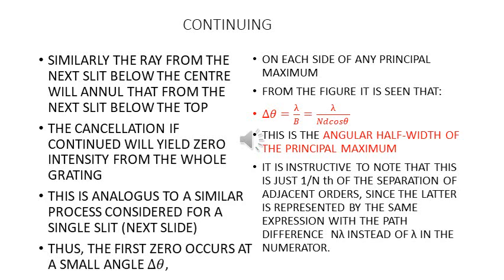Thus the first zero — the first minima — occurs at a very small angle Δθ on each side of any principal maximum. From the figure we can see that Δθ is given by λ/b, or this equals λ/(Nd·cosθ), where b = Nd·cosθ. The phase difference is λ/N. This is known as the angular half-width of the principal maximum. It is quite instructive to note that this is just 1/N of the separation of the adjacent orders, since the latter is represented by the same expression with path difference Nλ instead of λ in the numerator.